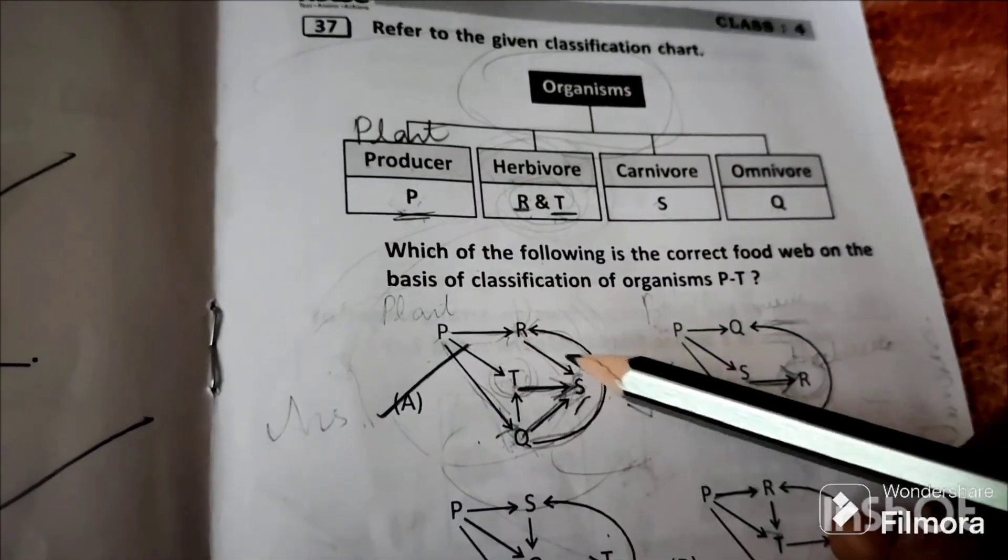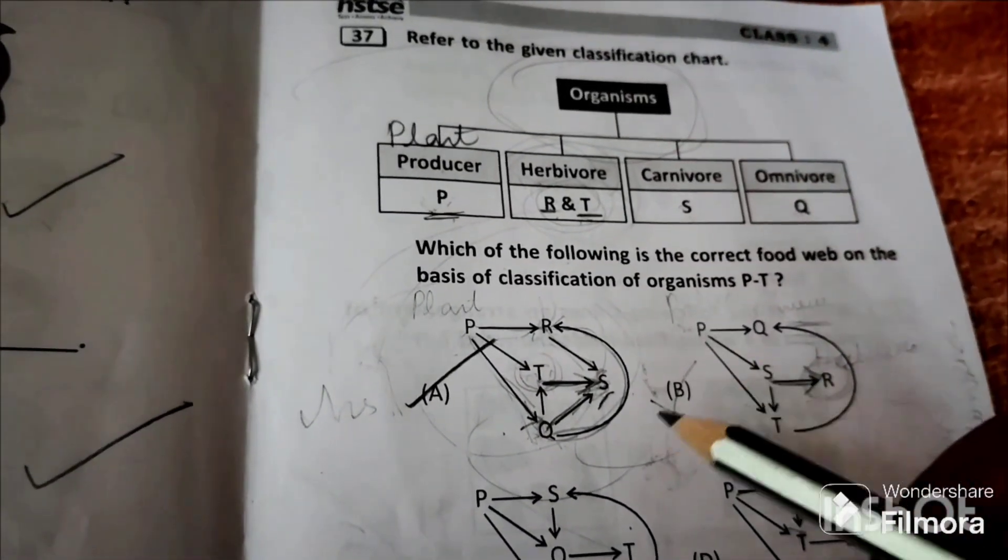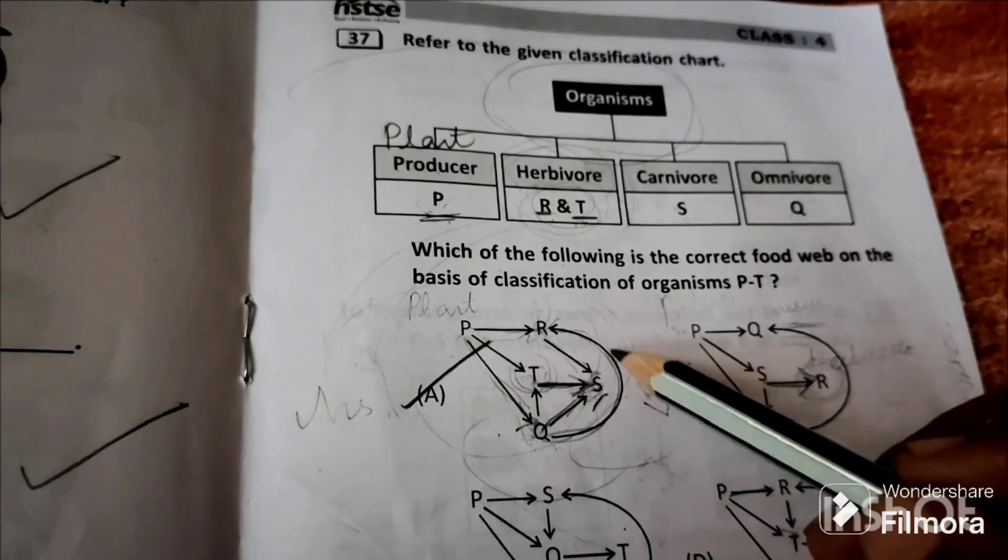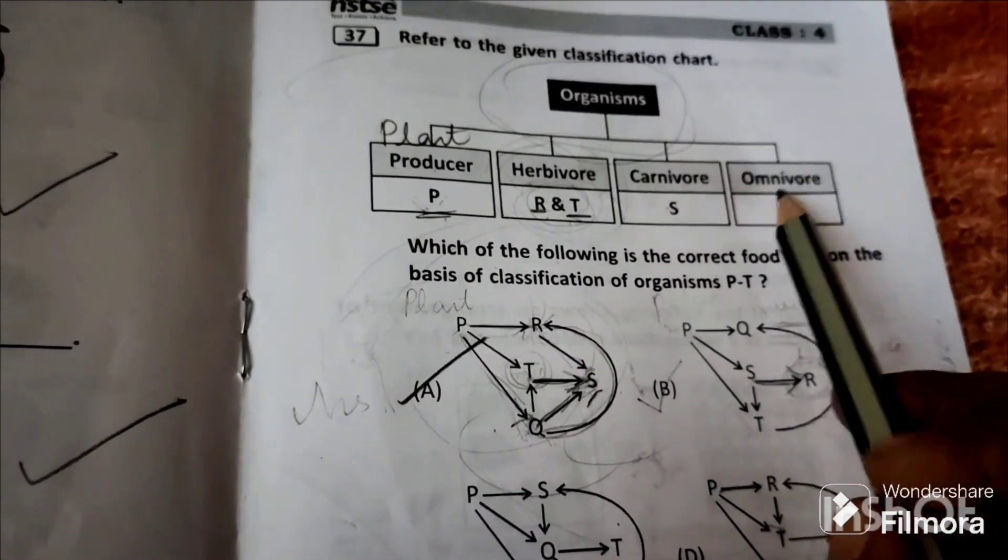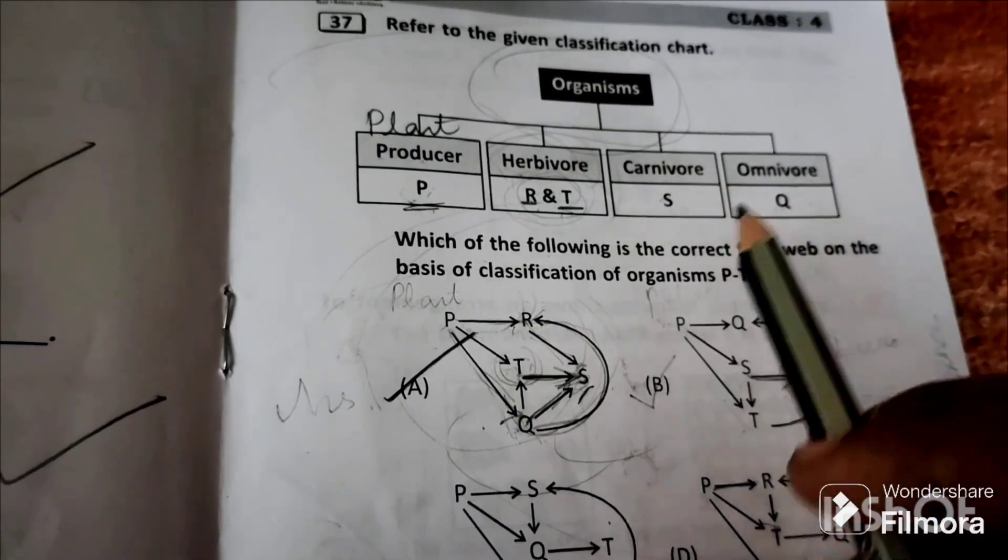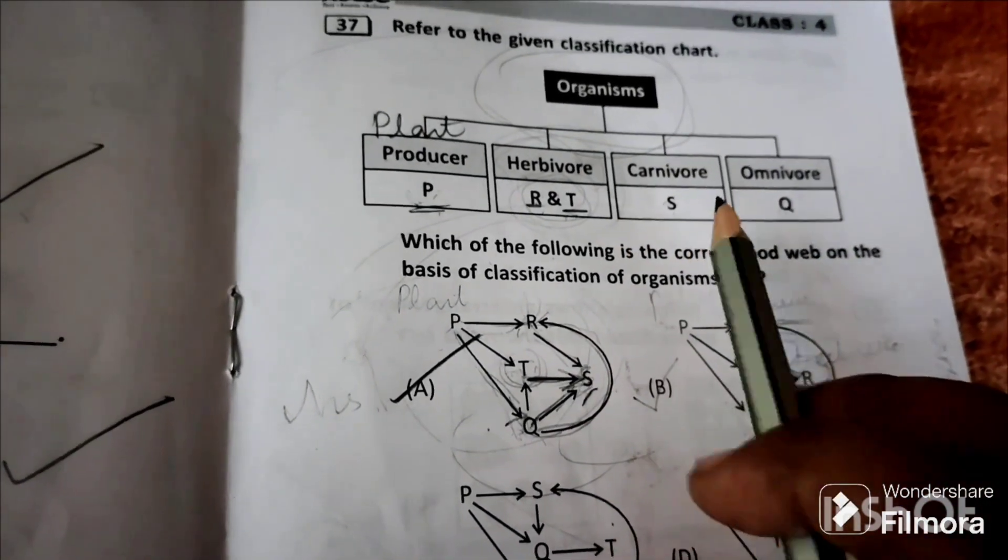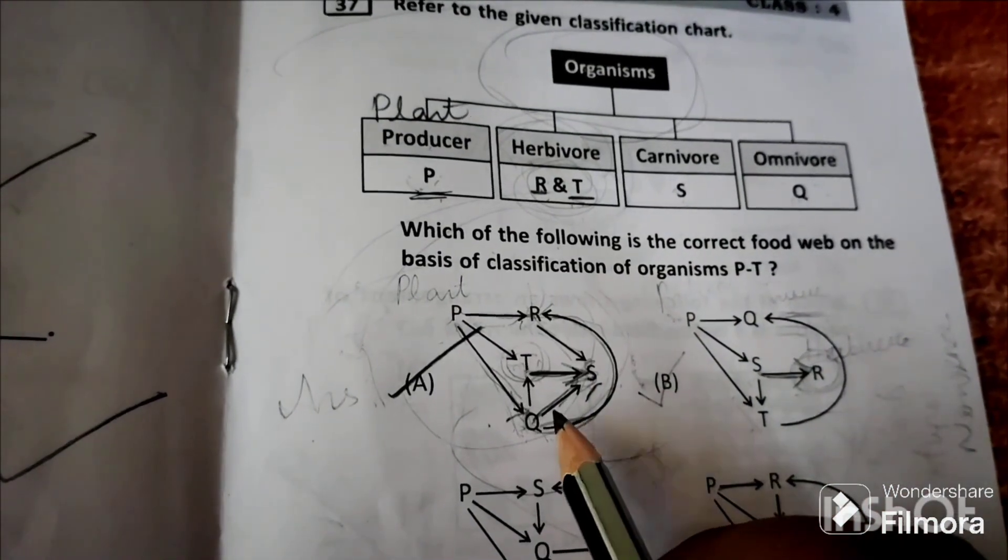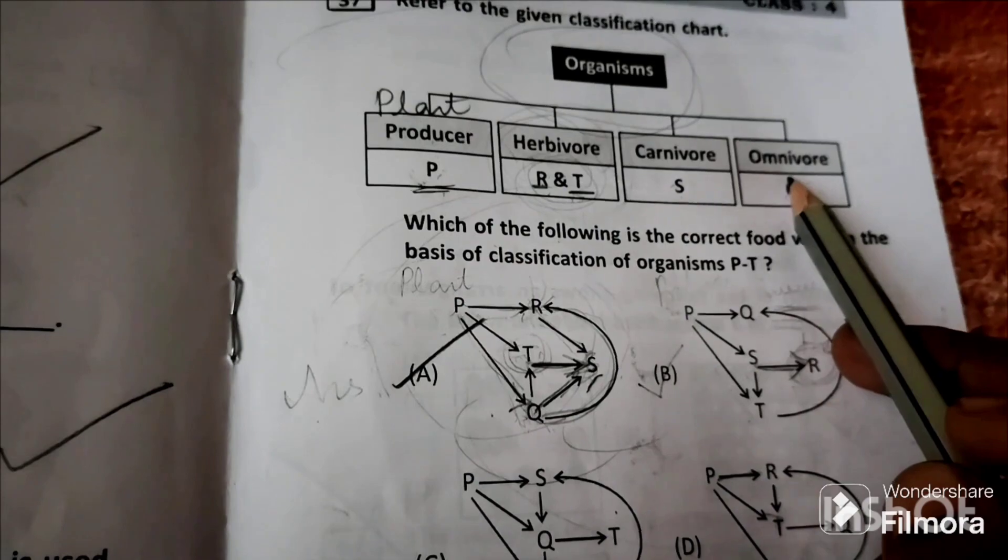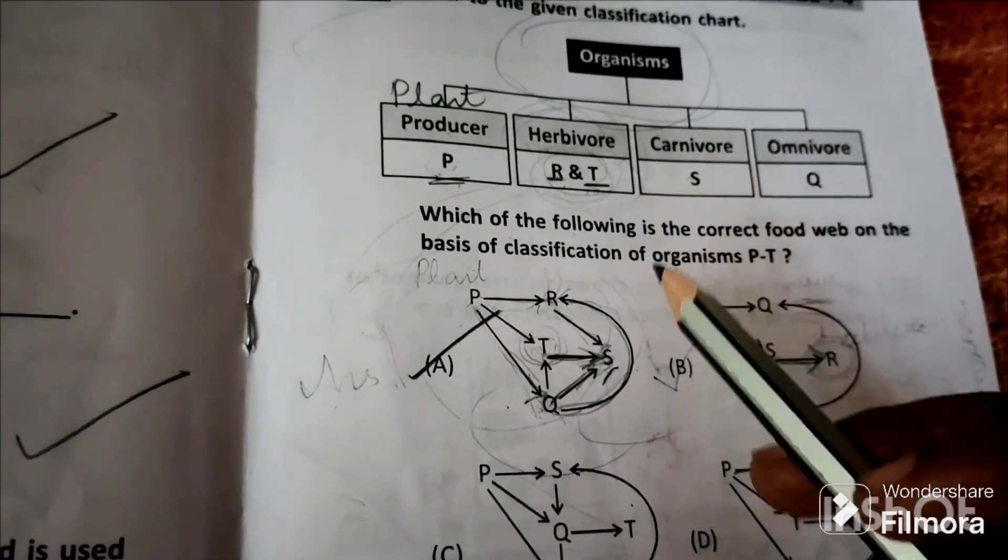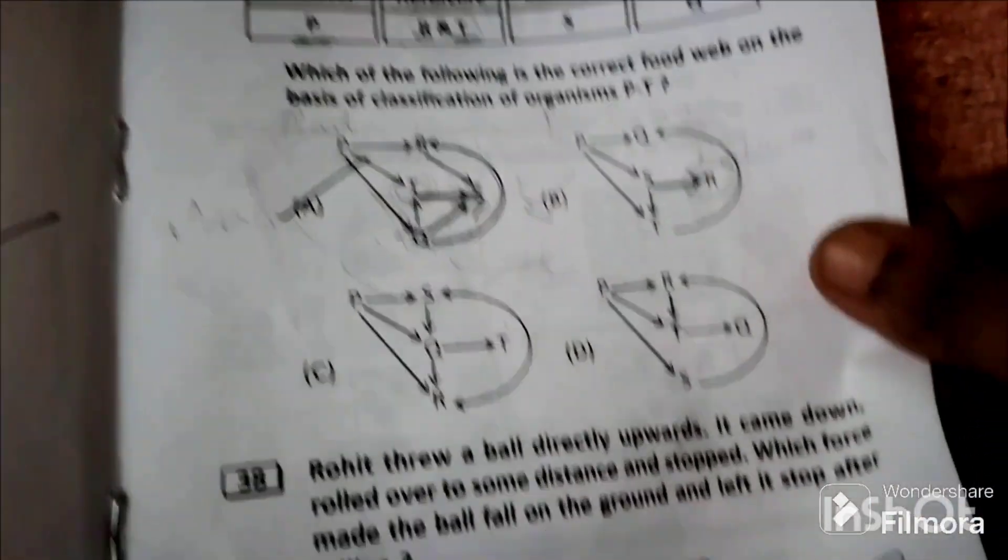Plant is going as food to omnivore as well as herbivore. Q is going as food to R, that means omnivore is going as food to carnivore. Herbivore is going as food to carnivore. Q is going as food to carnivore, so this food web is correct. Option A is correct.